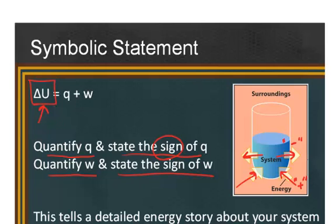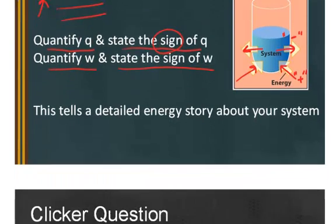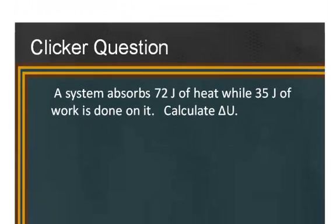So this can tell a detailed story, even though it's such a simple expression, it can tell a detailed energy story about your system. Let's take a look at an example here. Say you have some system that you've defined and it absorbs 72 joules of heat while 35 joules of work is done to the system. Calculate the change in internal energy.